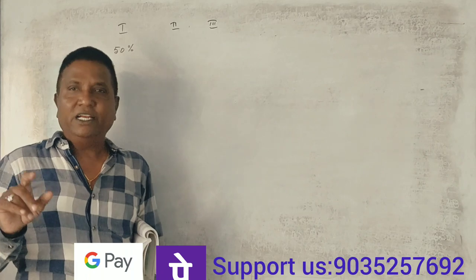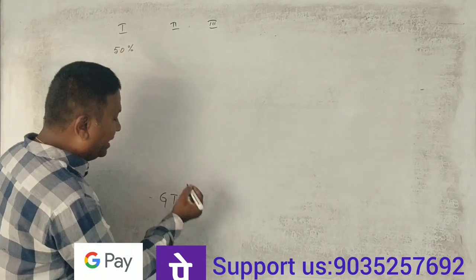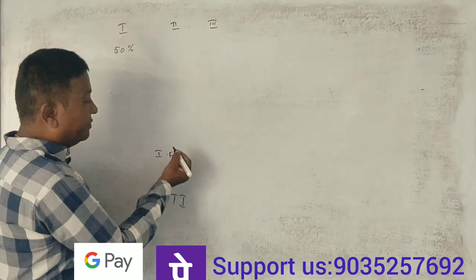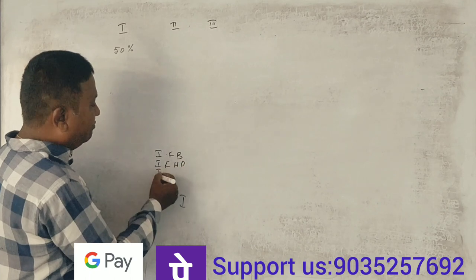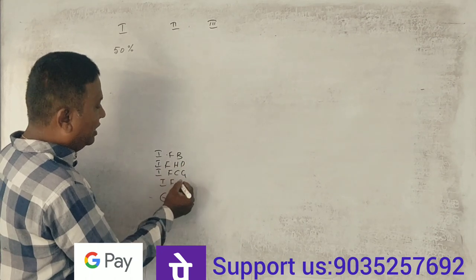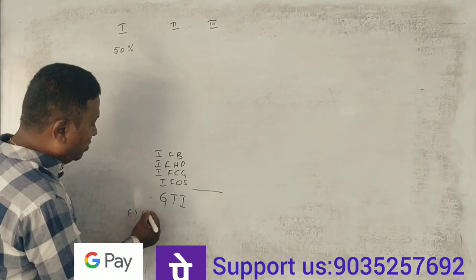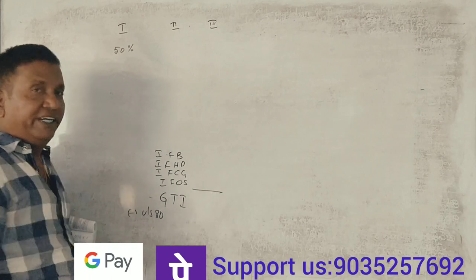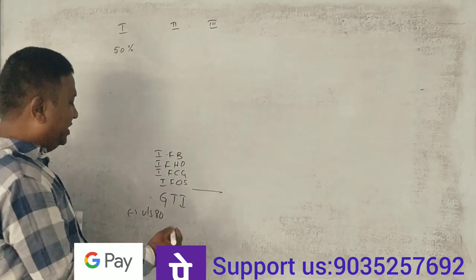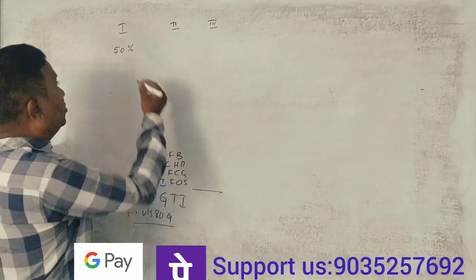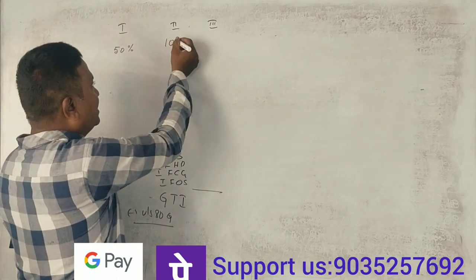That is 50% of gross total income. Gross total income comprises: income from business, income from house property, income from capital gains, income from other sources. This is the gross total income. Now, under Section 80G deductions, the first qualified is 50% of the donation. This is 100% without any limit.